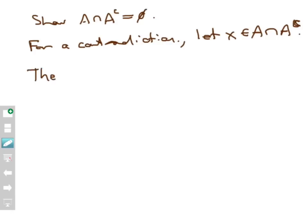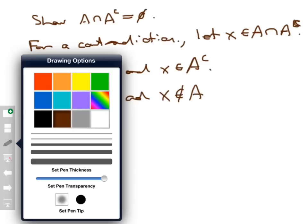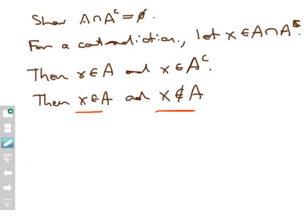Then X is in A and X is in A complement, by the definition of intersection. But if X is in A complement, that means X does not belong to A. Now we have a contradiction: X is in A and not in A at the same time. So that X can't exist, and therefore the intersection of A and A complement must actually be empty. So there are a couple of quick proofs of set identities. You can go back to every single one of those identities in the two lengthy lists and prove them all — it's a good chance to try your hand at some of those things. Thanks for watching.